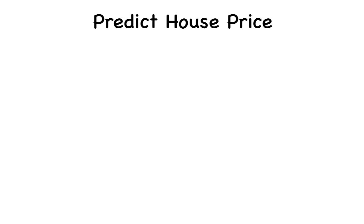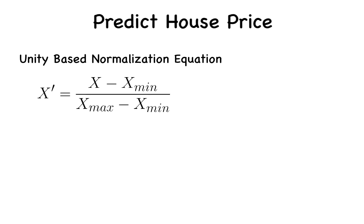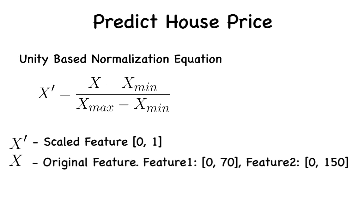So, we can use a simple formula to compute the new scaled feature, that is, x bar is equal to x minus x min divided by x max minus x min. Here, x bar is the scaled value of x, that is, the feature for a given sample.